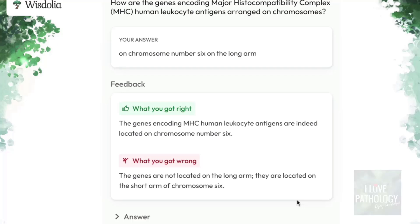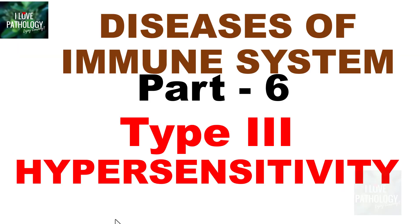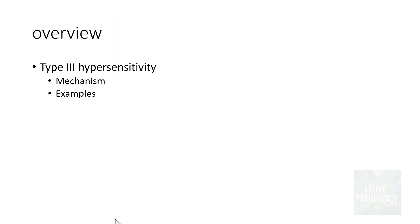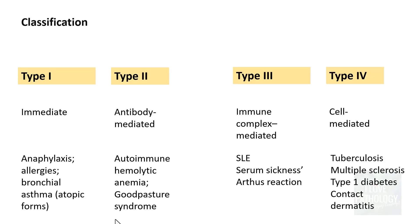After you complete watching the video, just click on the practice session and enjoy learning. In continuation with the immunopathology series, this is part 6 of diseases of the immune system, where we will be discussing type 3 hypersensitivity — its mechanism or pathogenesis along with some examples.